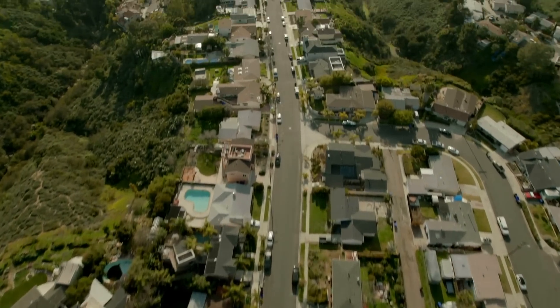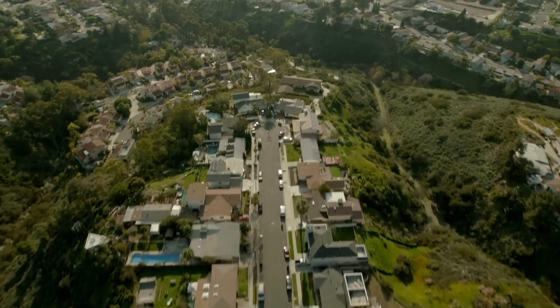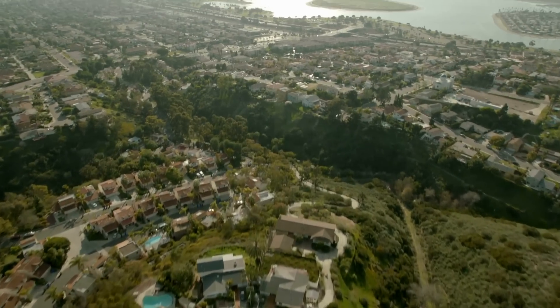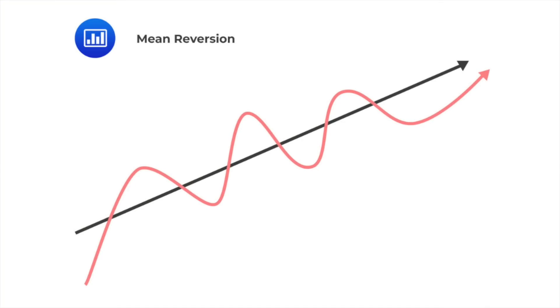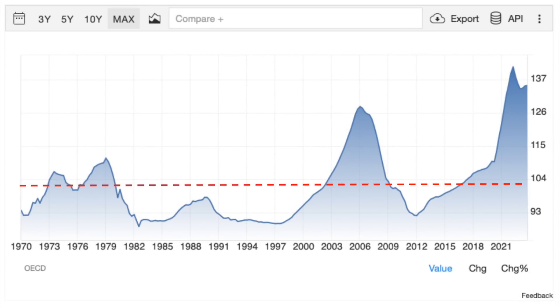The easy answer to this question is based on a simple mathematical concept: mean reversion. Mean reversion simply suggests that high or low extremes tend to return to their long-term average over time. The data going back to the 1970s indicates that this ratio hovered around a certain level, but as you can tell, we've gone completely off the charts — and a specific example will make you question the sanity of this market.